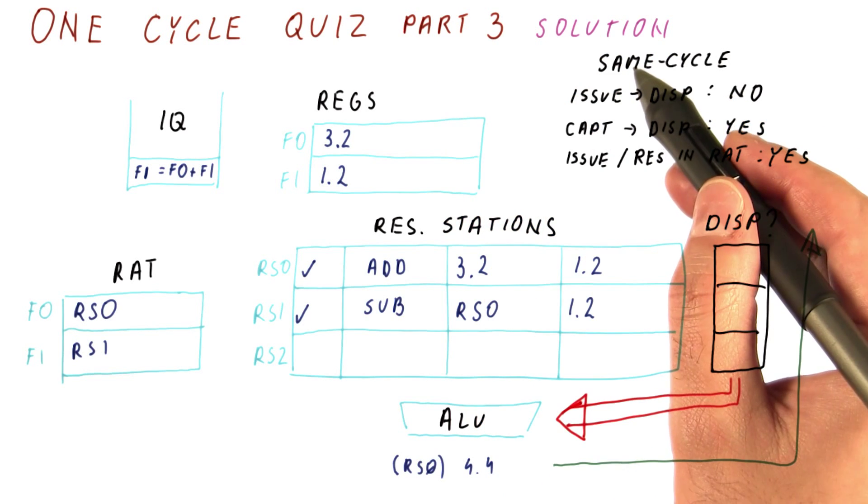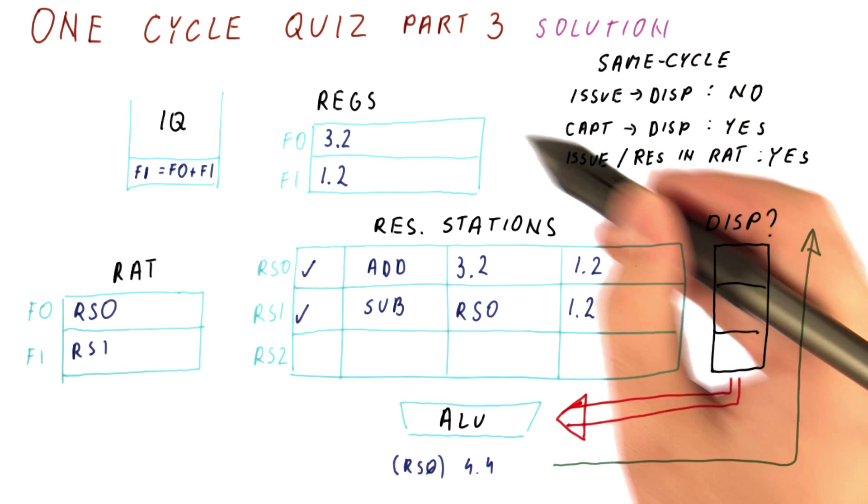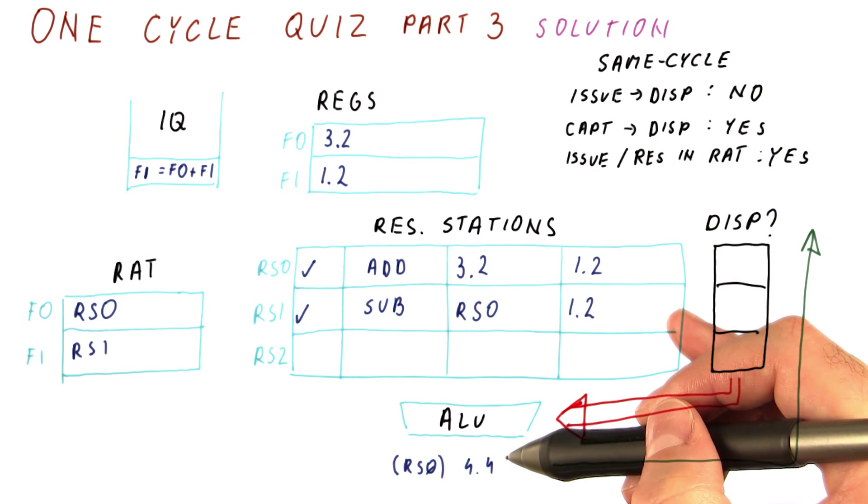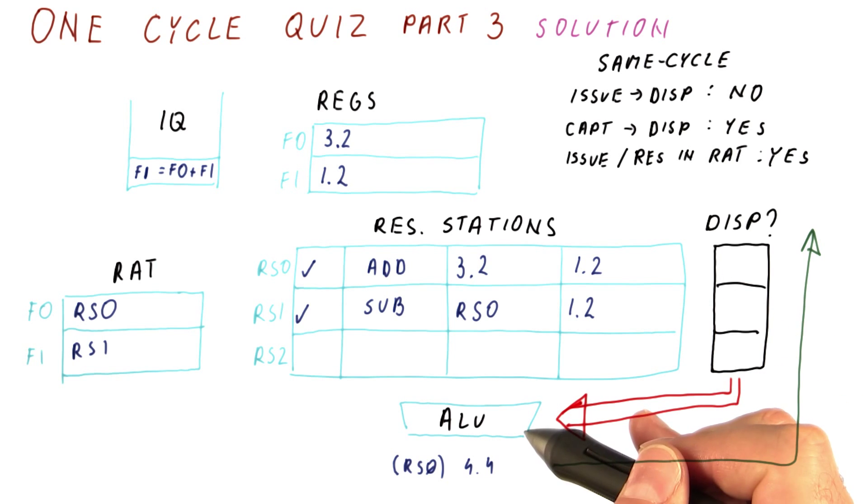Let's look at the solution for part three of our one-cycle quiz, which is about this state at the beginning of the cycle. Then during this cycle, which, if any, instruction will dispatch into the ALU here.